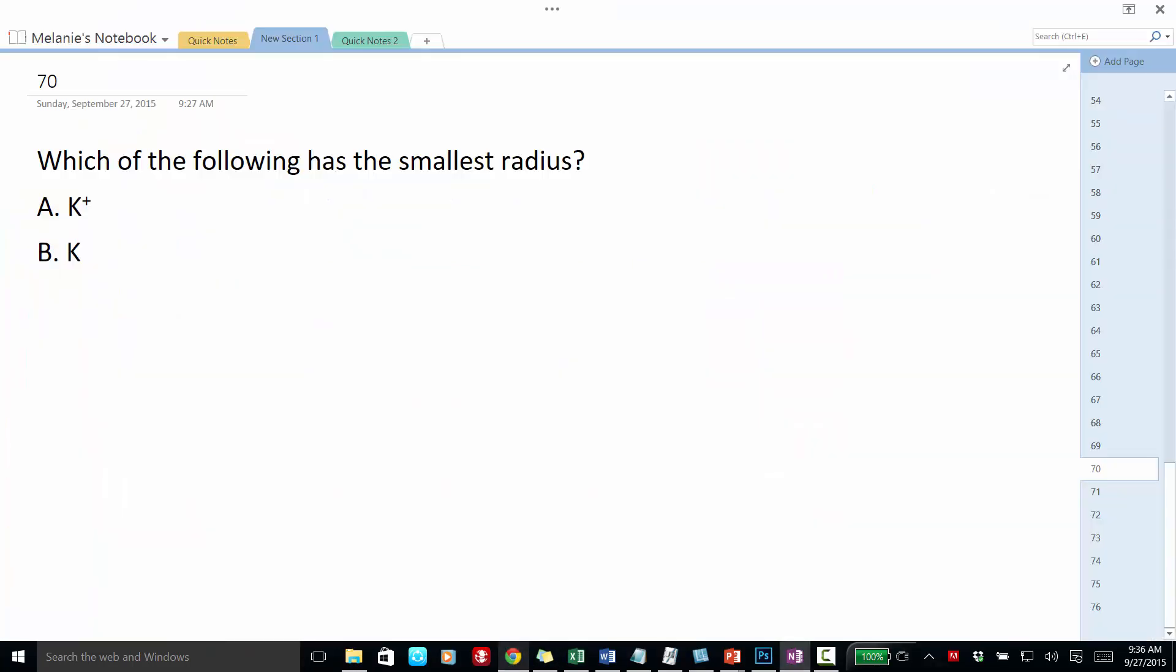Going back to here, if we have potassium here surrounded by 19 electrons versus potassium ion surrounded by 18 electrons, which one is going to have the smallest radius?